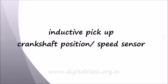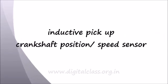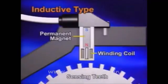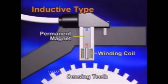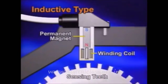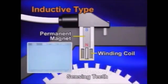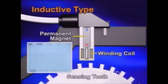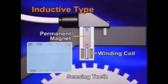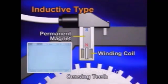Today we are going to see inductive pickup, that is crankshaft position or speed sensor. Here you can see the animation of the inductive type speed measuring device. It consists of a permanent magnet, winding coil, and metallic toothed rotor mounted on a shaft whose speed is to be measured.